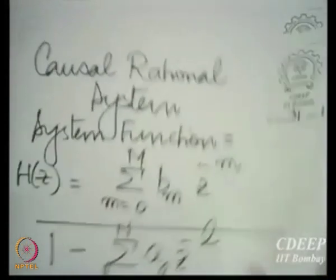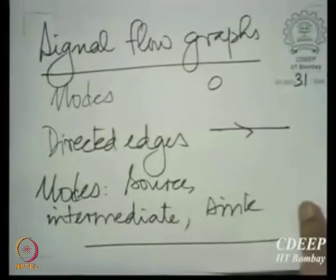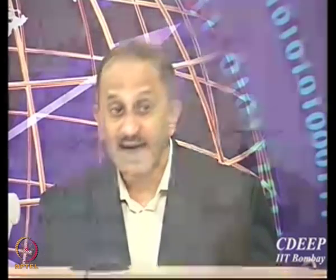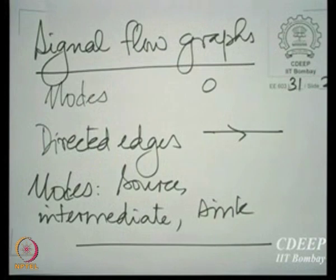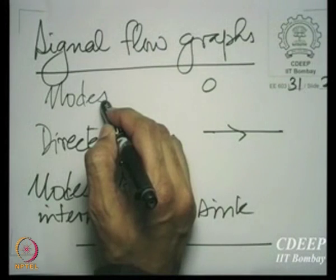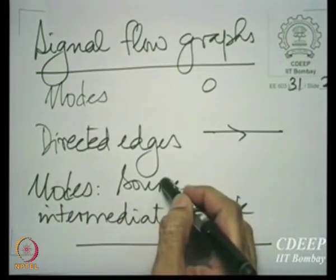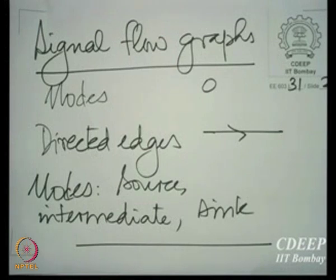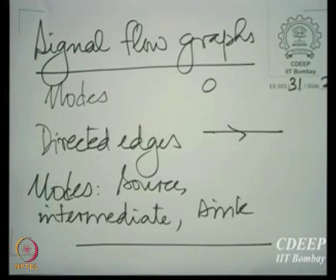The approach to realisation is essentially by using what are called signal flow graphs. We need first to define a signal flow graph in a slightly more formal way than we have done before. A signal flow graph is a collection of nodes and directed edges. Among nodes, we have different kinds: we have source nodes, we have intermediate nodes, and we have sink nodes. Nodes from which all edges go outwards — nodes which provide to other nodes only — are called source nodes. Nodes which have edges coming in as also going out are called intermediate nodes.